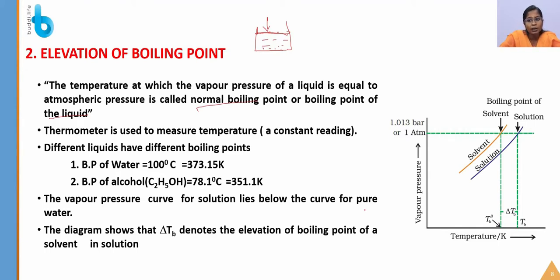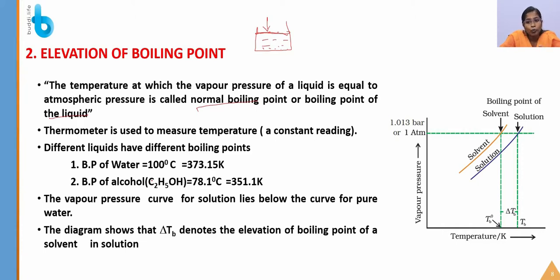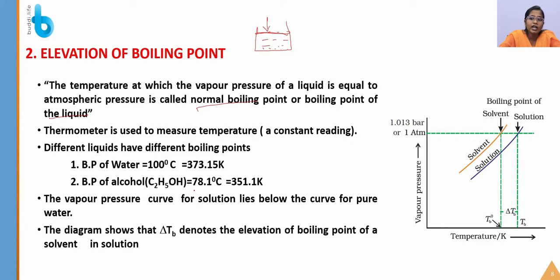A thermometer is used to measure temperature at a constant reading. Different liquids have different boiling points. The boiling point of water is 100°C (373.15 K). Water does not start to boil until 100°C — while heating, it is getting heated, not boiled. After 100°C, the vapor pressure equals atmospheric pressure and water starts boiling. The boiling point of alcohol is 78.1°C.